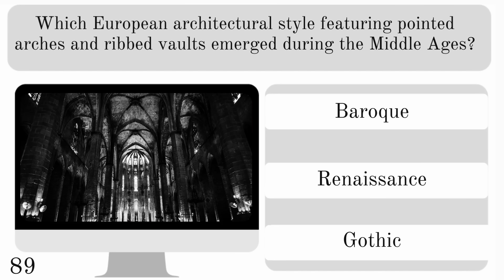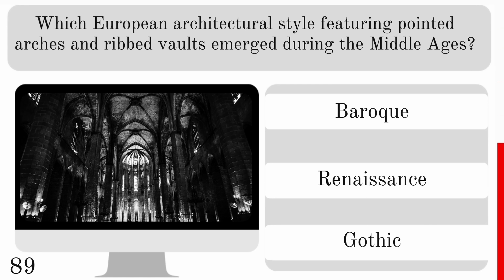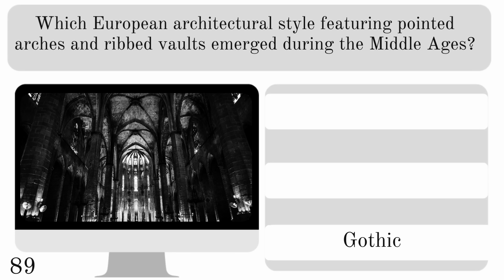Which European architectural style featuring pointed arches and ribbed vaults emerged during the Middle Ages? Baroque, Renaissance or Gothic? And the answer is Gothic.